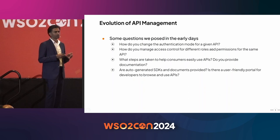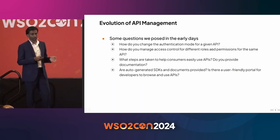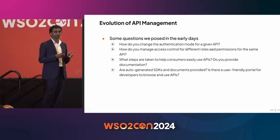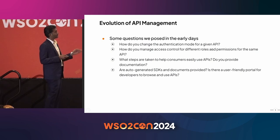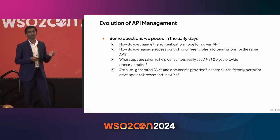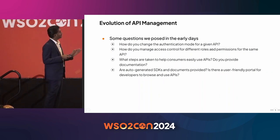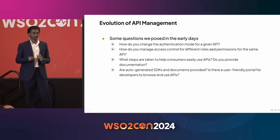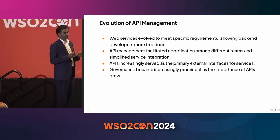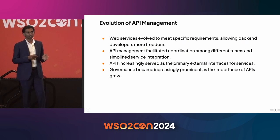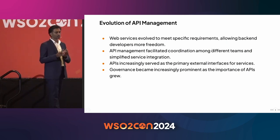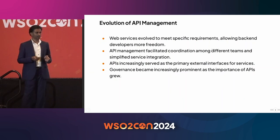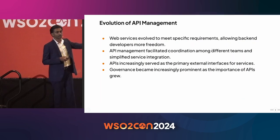Over time, people started adopting APIs and API management platforms. We asked: how do you address security from one API to another, and how easy is it for your consumers to consume these APIs? As API management evolved, backend developers got more freedom — they could focus on business logic while the API management layer handled authentication, authorization, and rate limiting.